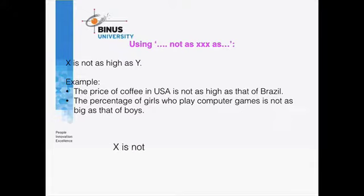With the 'as...as' structure, you can also indicate a big or small difference using 'nearly' and 'quite'. So: X is not nearly as big as Y, and X is not quite as big as Y. 'Nearly' refers to a big difference, and 'quite' refers to a small difference. Little details like that are really good touches to improve the accuracy of your writing and help you get a higher score.